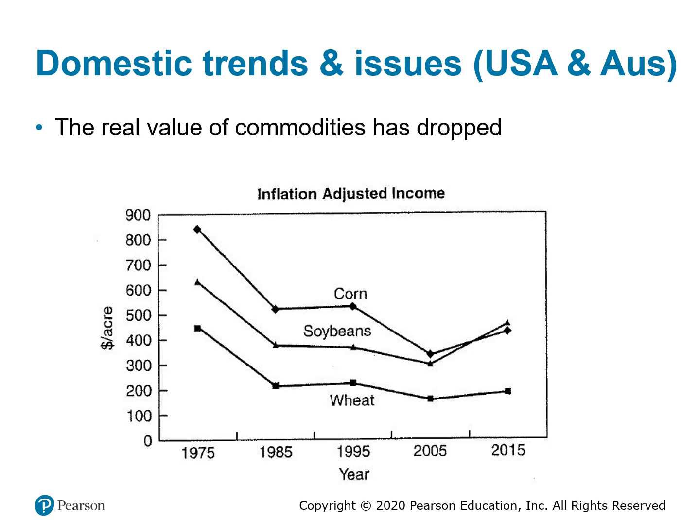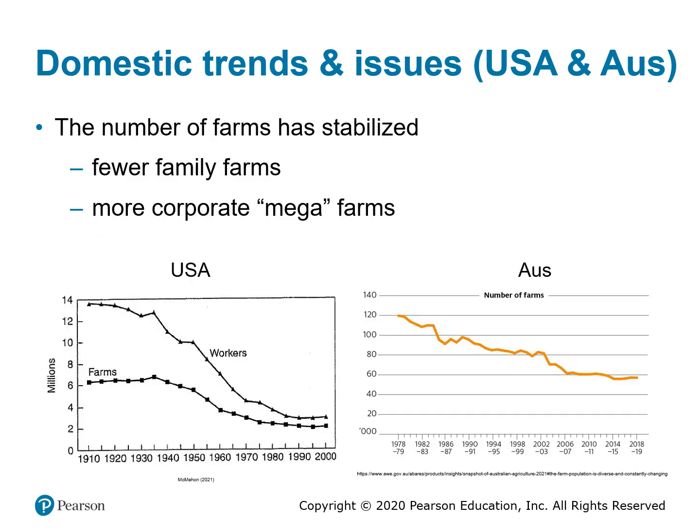Looking at domestic trends and comparing the United States — the source of the prescribed text — with Australia: in most cases the trends match, with a few exceptions. The first trend is that the real values of commodities has dropped, although they have stabilized over the past decades, while costs have increased. Secondly, the number of farms has been declining, with fewer small family-owned farms and more large corporate farms, although this appears to have stabilized in both the United States and Australia.